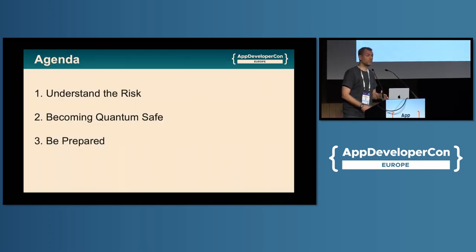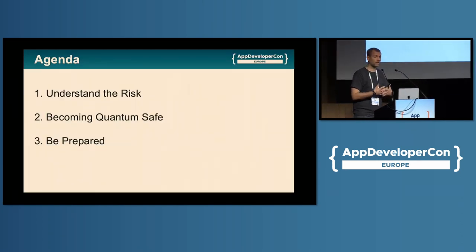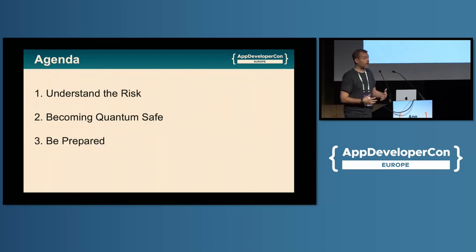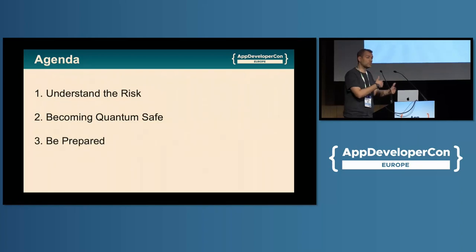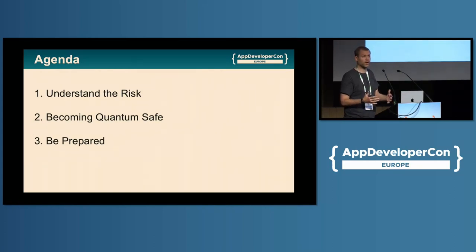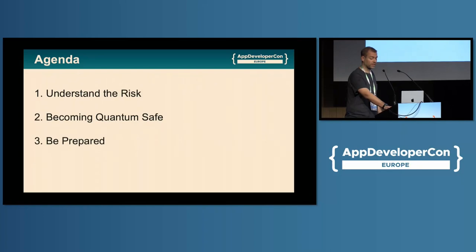Three things I want people to take away from this talk. One is I want them to understand the risk that quantum computing poses to security and encryption. The second thing is I want people to understand how you can start the journey to becoming quantum-safe — how do you mitigate that risk? And then lastly, I want to leave you with a couple of things that you can do today to get started on that journey.